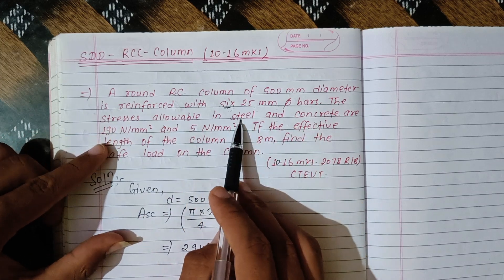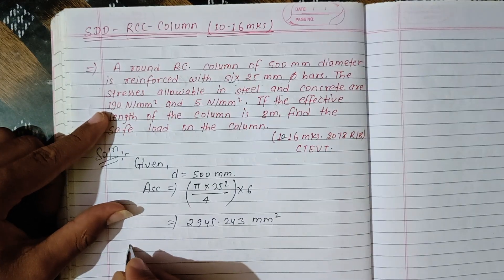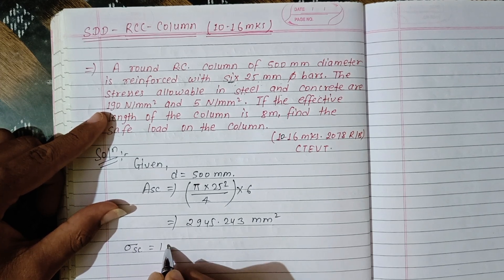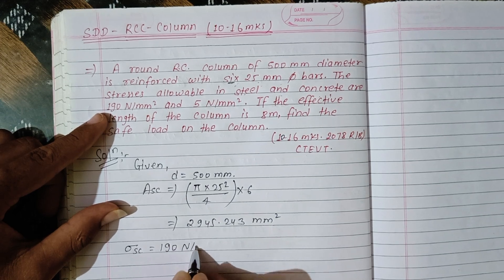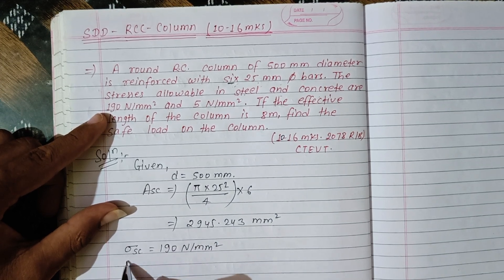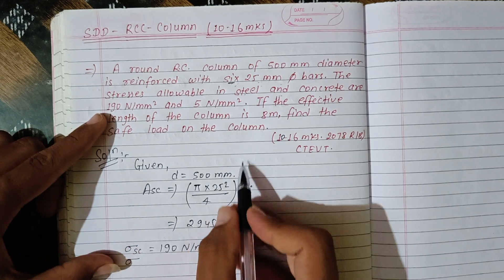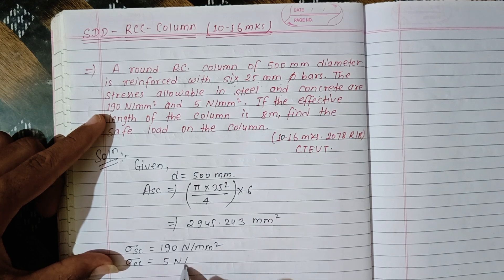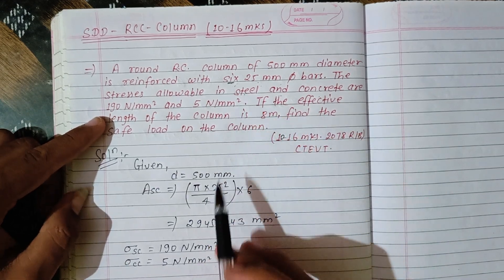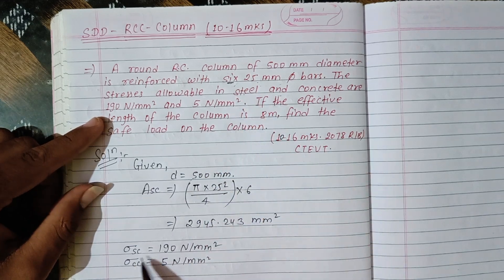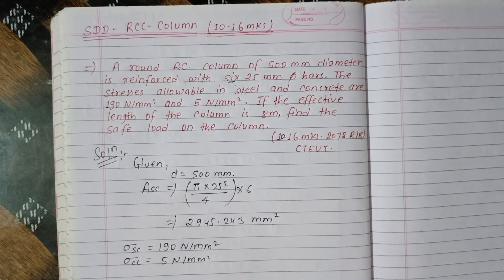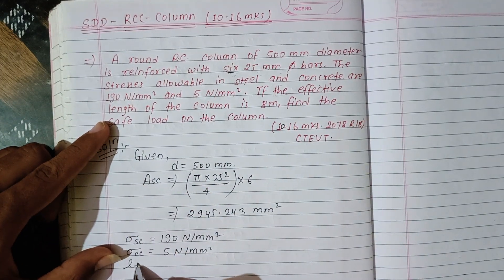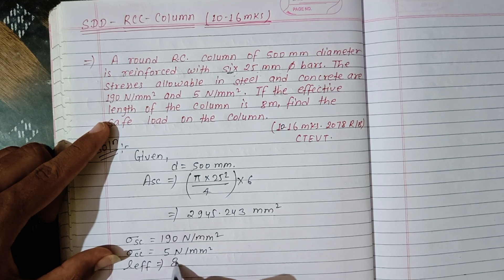Given: the allowable stress in steel, σ_sc = 190 N/mm². The allowable stress in concrete, σ_cc = 5 N/mm². The effective length L_eff = 8 meters.